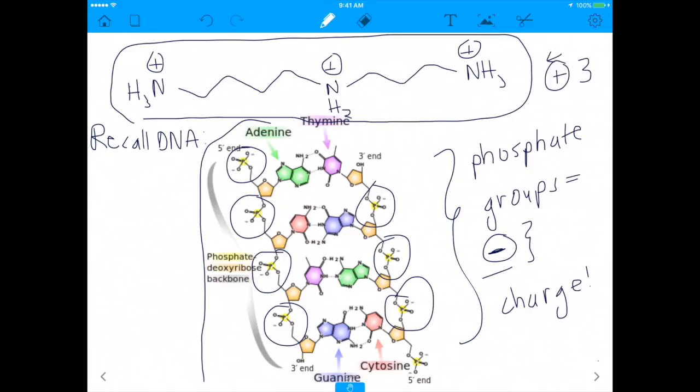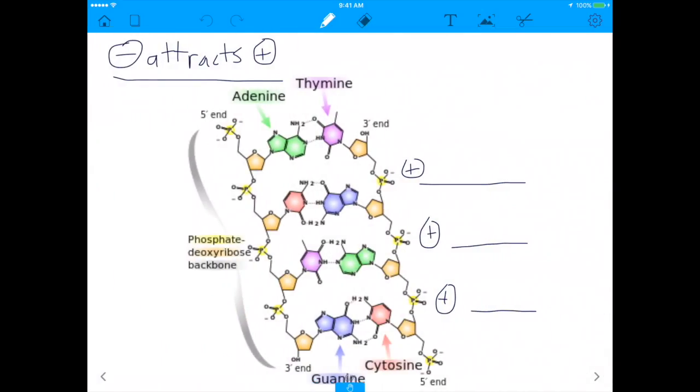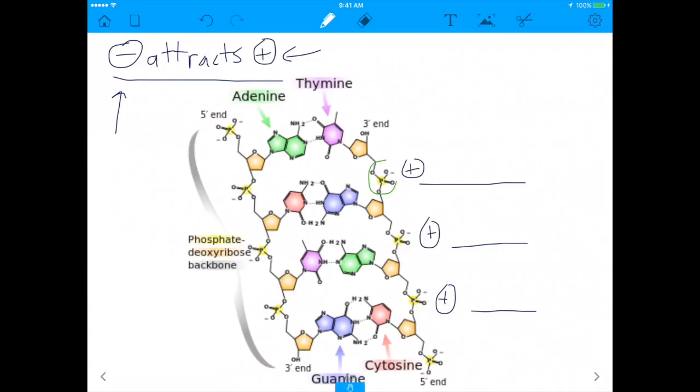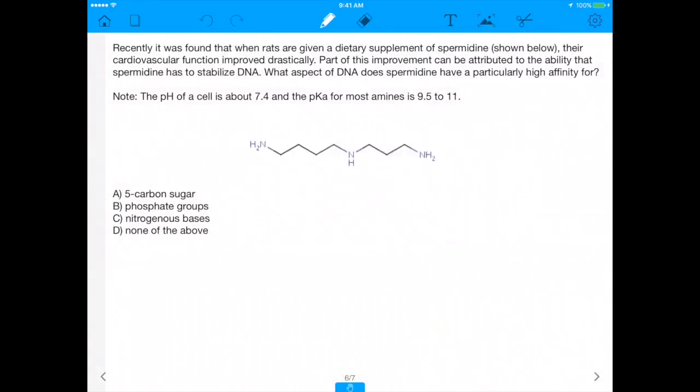And if you're thinking positive charge, you are absolutely right, because believe it or not, negative charge attracts positive charge. And what have we found out so far? We found out that the phosphate groups are negatively charged, as I'm circling right now. But the other thing that we've also found out is spermidine is positively charged. So spermidine will be attracted to the negatively charged phosphate groups, and that's where it will actually attach and bond.